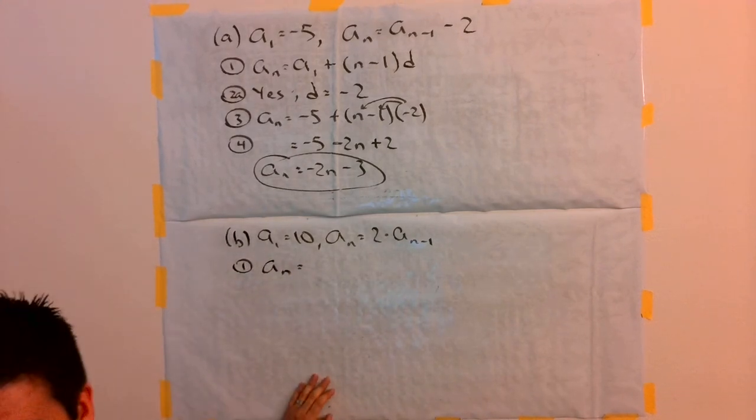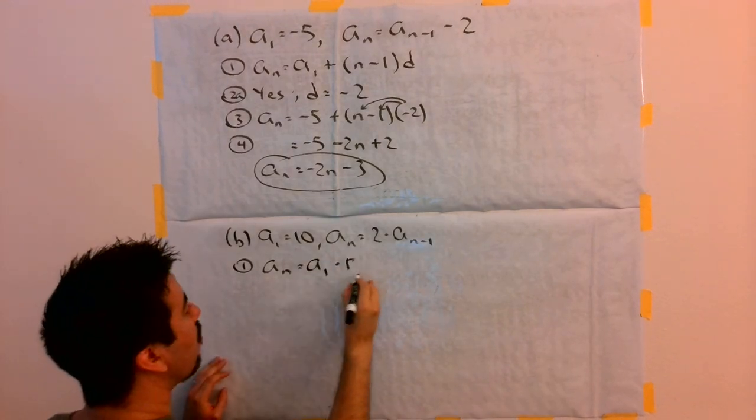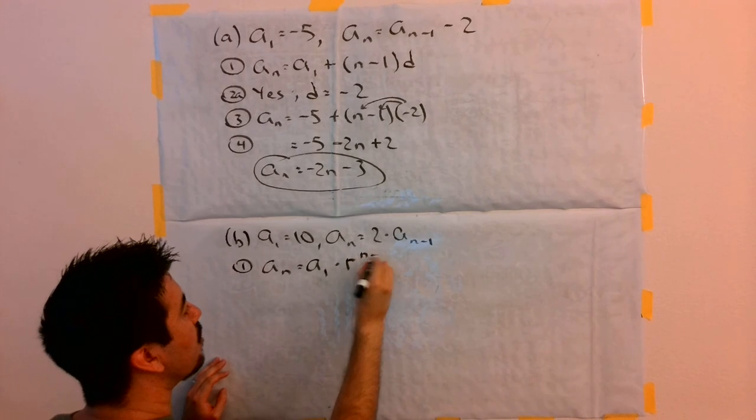So, the equation that we have here is going to be a of n is equal to the first term, a1, times r, the common ratio, whatever that is, raised to the n minus 1.